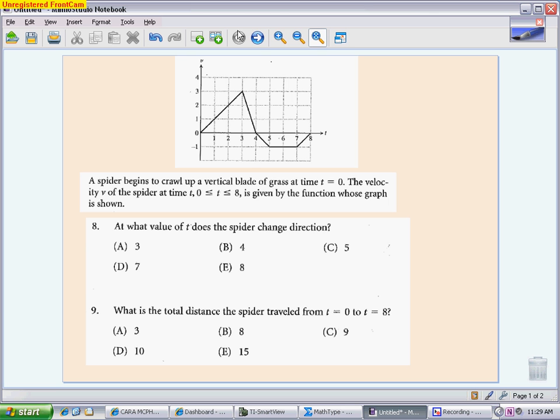So the first problem wants to know when is the spider changing directions. So let's put a little marking on this picture to kind of give an explanation. The spider starts traveling, and you'll notice the first thing you see is that the velocity is positive, is above the x-axis. That means that my spider, in this case, is traveling up the blade of grass.